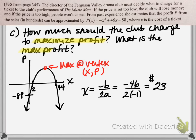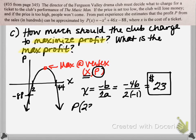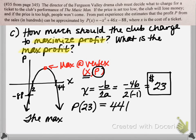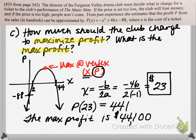Finally, the last part asks for the actual maximum profit. We found the x value of the vertex — $23 — but the profit is the y value of the vertex, which means we substitute $23 into our profit function: compute p of 23. Plugging 23 in, we get an output of 441. But be careful — look at your variable key one last time. Remember that p, the profit, was in hundreds of dollars, not dollars. So this tells us the maximum profit the club can make is actually $44,100. That maximum profit is reached when the club charges $23 per ticket.